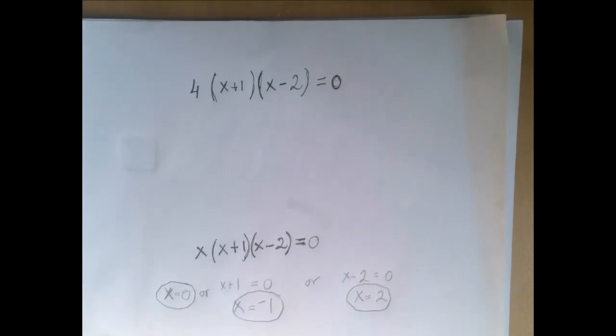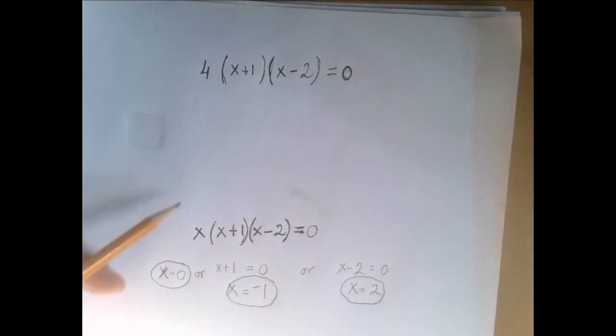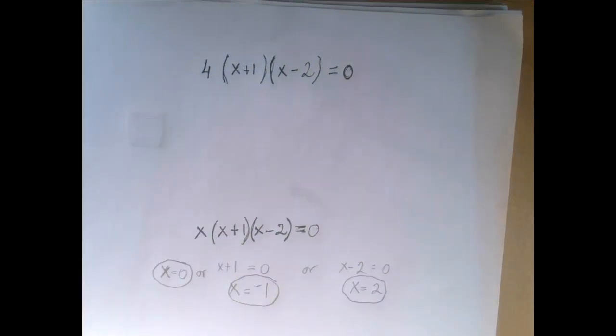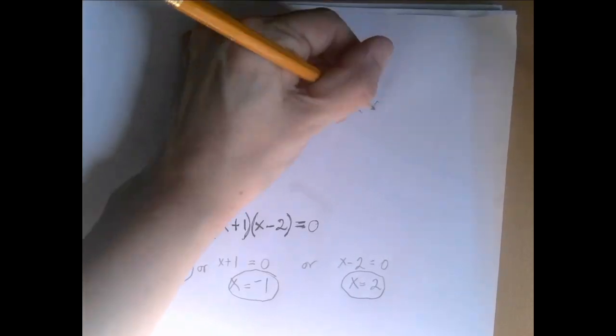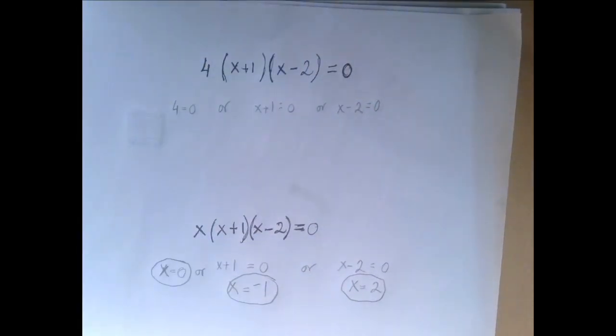Let's look at this other one, where visually they are similar but not algebraically. We have a product of three factors. When we apply the zero product rule, we get either that 4 equals zero, or x plus 1 equals zero, or x minus 2 equals zero.